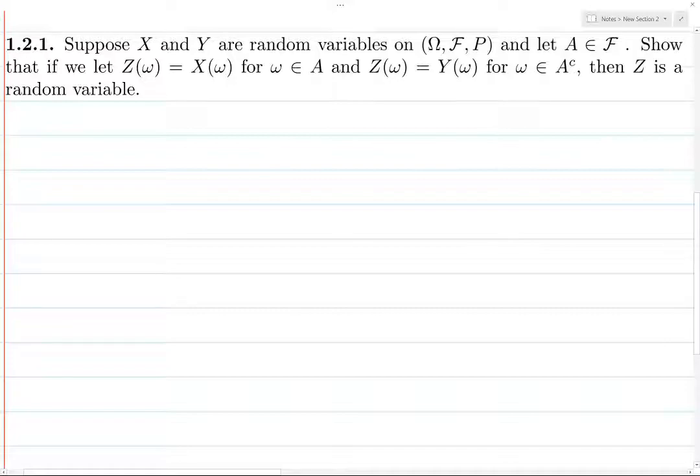And so it looks a lot like the definition of a homeomorphism in topology, because in topology a homeomorphism is a map between two topological spaces where the inverse image of an open set in the target space is open in the domain. And so, I think in general, like in a category theory sense, measurable functions are the morphisms in measure theory.